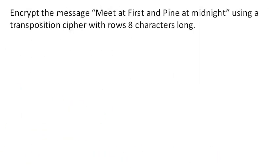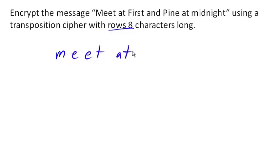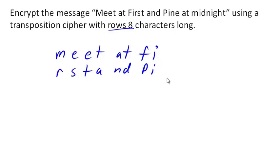Now we're going to encrypt 'meet at first and pine at midnight' using a transposition cipher with rows eight characters long — specifically a tabular transposition cipher. A transposition cipher, unlike substitution ciphers, doesn't change what the letters are; it just changes the order in which the characters appear. We use rows and columns and change the way we read them. We write the message out eight characters at a time, leaving out the spaces.